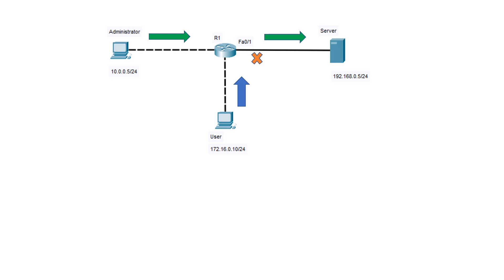To understand the benefit of using ACLs in your network, consider the following topology. A server holds important documents that need to be available only to the administrator. We can configure an access list on router R1 to enable access to the server only for the administrator's workstation; any other traffic going to the server will be blocked. Note that ACLs are not used exclusively for packet filtering — they are also used to match packets for network address translation (NAT), quality of service decisions, and other purposes.